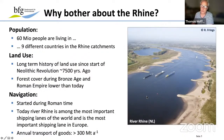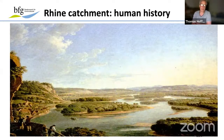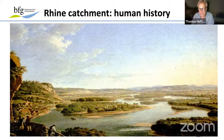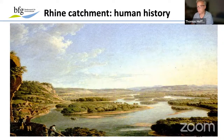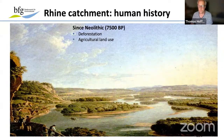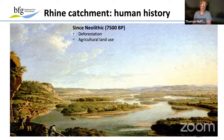Today you see a straightened channel with groin fields and heavy traffic. But naturally, the Rhine looked very different — here is a painting of the upper Rhine showing a braided river system with many islands. This situation no longer exists today. All the channelization has certainly changed the water balance but also the sediment dynamics in this area.